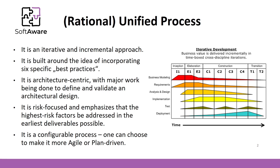RUP is an iterative and incremental approach built around the idea of incorporating six specific best practices — the word 'best practices' is in quotes because that is how these specific practices are called. RUP is an architecture-centric method, meaning significant time is spent developing and validating system architecture models. It is a risk-focused method that emphasizes the highest risk factors be addressed in the earliest deliverables possible. It is also a configurable process — a team can choose the proportions of activities and can choose to be more agile or plan-driven.